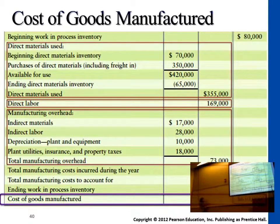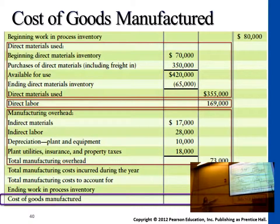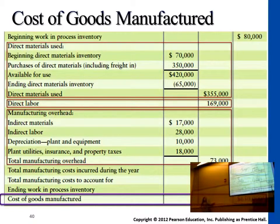We carry that over to calculate what is the finished goods cost, because this is only one part — the first category. We still have direct labor to consider: $169,000 in wages paid to employees. Then indirect costs, which break down to indirect material, indirect labor, utilities, rental — all together $73,000. These are the three main types of costs. Last year we had halfway-done inventory worth $80,000 to consider. Adding everything together and subtracting ending work-in-process — $27,000 of halfway-done products — the finished goods we actually manufactured this year are worth $650,000.